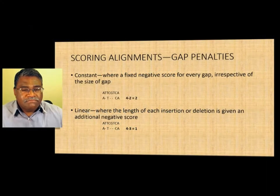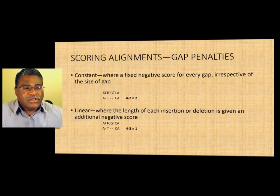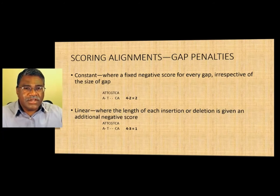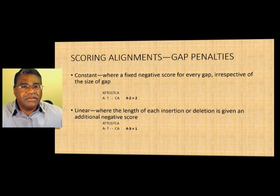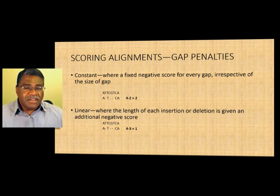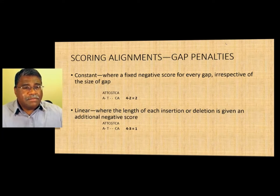When you align two things, you want to put as many gaps as you can to make things work. But there has to be a fine line between putting a gap to align things properly versus overusing gaps. That's one of the reasons why you have a score — a numerical value — that tells you whether this is a better alignment or not. In order for alignment to take place, you introduce gaps, but in order to be careful about what gaps you introduce and why, you have what are called gap penalties.